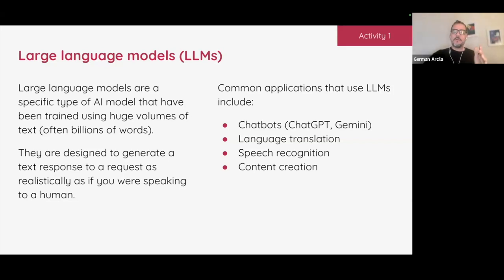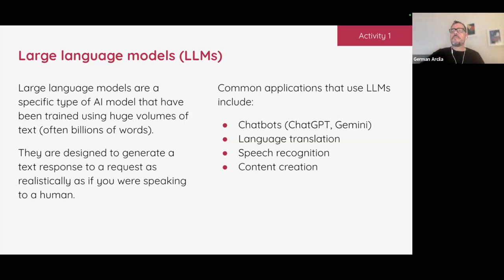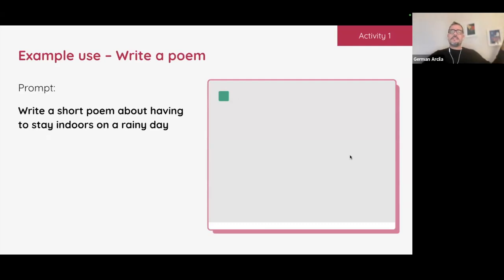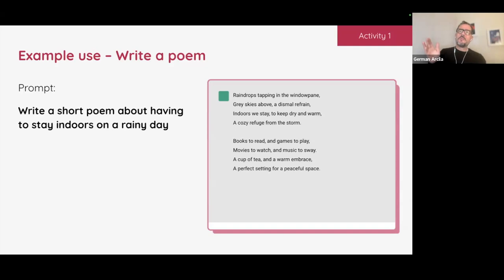Speech recognition is a great example. First, it takes the sound and transforms it into written words. Then it does an analysis of those words to make sense of the sentence, then reverses the whole thing to give you an answer. Your kids have done this — 'write a poem' and it writes a poem. I've shown this to several English teachers who were unimpressed, but for someone with my capacity to write poetry, I'm in awe. It depends who you show it to.